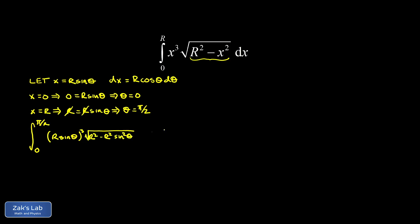Again, that is designed to take advantage of the Pythagorean identity. 1 minus sine squared theta is equal to cosine squared theta. And don't forget to transform this differential dx. That transforms to r cosine theta d theta.